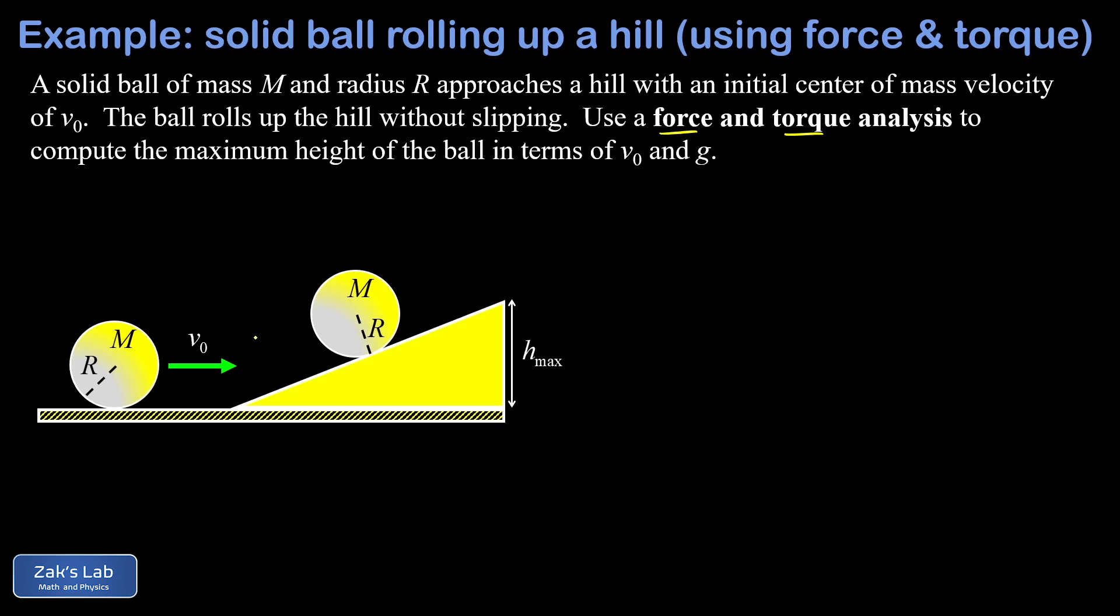But this time we're going to look at it from the perspective of using force and torque to analyze the motion of the ball. That will give us the acceleration of the ball and then we can use kinematics to get that maximum height. Now this is going to be a more difficult approach to the problem, but it's still worth studying because force and torque analysis of a rigid body is often the only way to solve a problem, so this is really good practice.